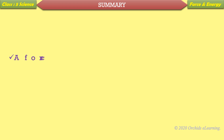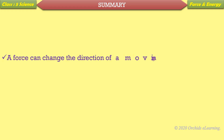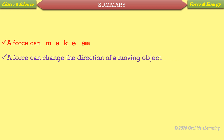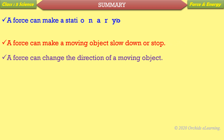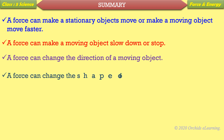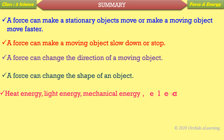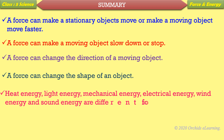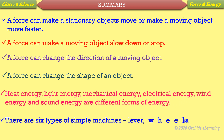Summary: A force can make a stationary object move or make a moving object move faster. A force can make a moving object slow down or stop. A force can change the direction of a moving object, or change its shape. Heat energy, light energy, mechanical energy, electrical energy, wind energy, and sound energy are different forms of energy. There are six types of simple machines: lever, wheel and axle, pulley, inclined plane, screw, and wedge.